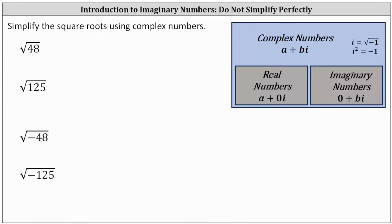We want to simplify the square roots using complex numbers. Recall complex numbers are the numbers in the form of a plus bi, where a is the real part, bi is the imaginary part, i equals the square root of negative one, and i squared equals negative one.